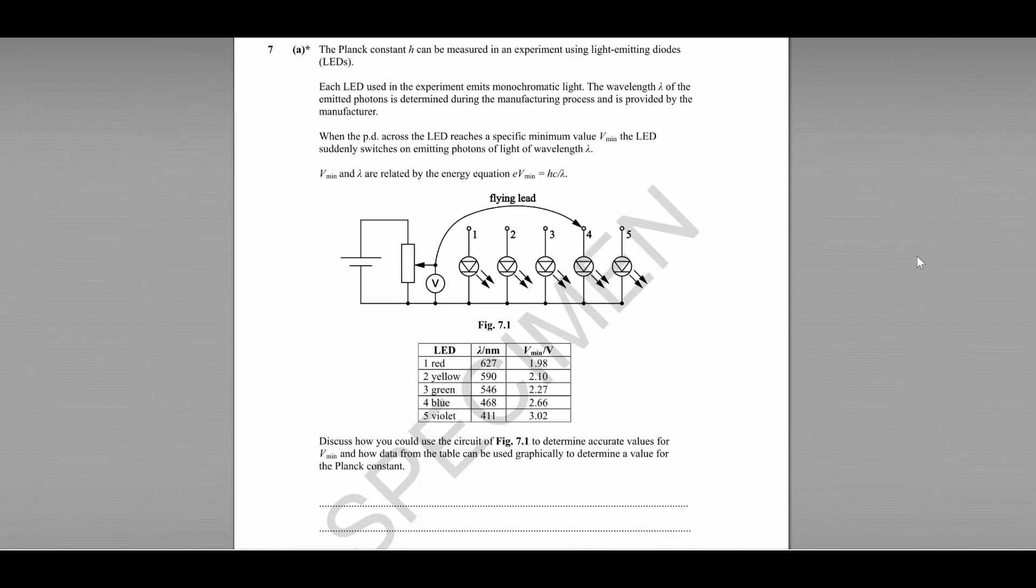When the potential difference across the LED reaches a specific minimum value Vmin, the LED suddenly switches on emitting photons of light of wavelength lambda. And we know that this minimum voltage and the wavelength are related by the energy equation EVmin equals hc divided by lambda, where h is the Planck constant and c is the speed of light in a vacuum.